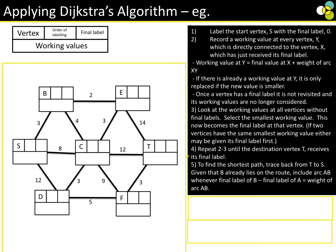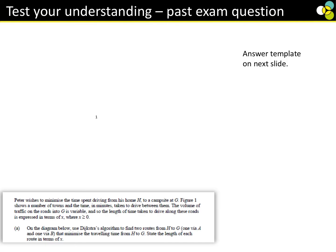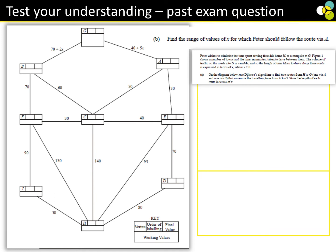Now a question involving Dijkstra's with algebra. Peter wishes to minimise the time spent driving from his home to the campsite. On the diagram, use Dijkstra's algorithm to find two routes from H to G: one via A and one via B. Starting at H — first place, weight 0. From H: I=50, F=130, C=140, E=95, D=80. The smallest is 50, so I is the second place. 50+90=140. Looking at all working values, the smallest is 80 — D is the third place. 80+70=150 but not smaller than 95.